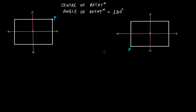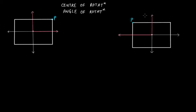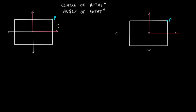We rotate again by 90 degrees and the new position gives us 270 degrees total. At an angle of rotation of 270 degrees, we have rotational symmetry because the two figures are the same. We further rotate by 90 degrees and point P travels the full 360 degrees, returning to where it started. At 360 degrees, we again have rotational symmetry.